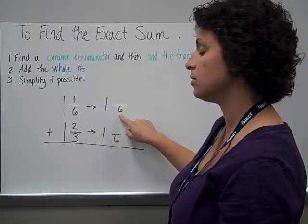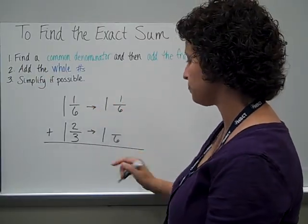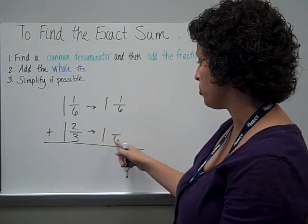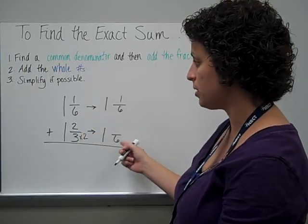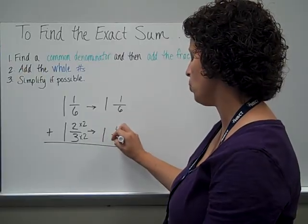This denominator was 6, so it stayed 6. And so if my numerator was 1, it will stay 1. This fraction, though, if the denominator changed, went from 3 to 6. 3 times 2 makes 6. And so I need to multiply the numerator by 2 as well. And 2 times 2 is 4.